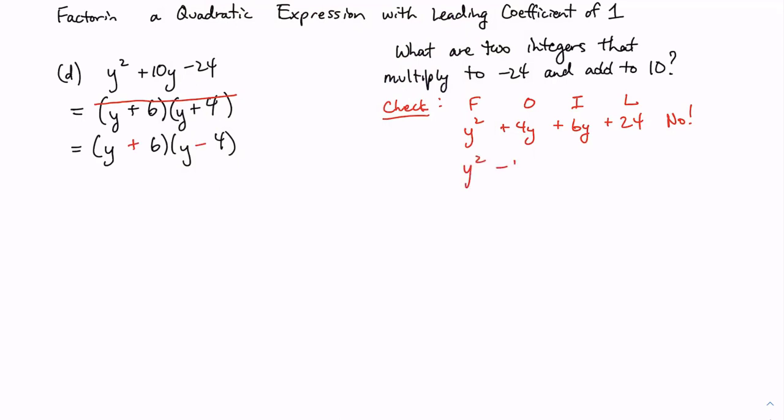We'll check again. Y squared minus 4y plus 6y minus 24. So this time we got the minus 24. But did we get positive 10y? And the answer is no. So if it's a no, we can't circle those two factors. In fact, we're crossing it out. We got to try something else.